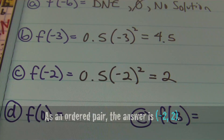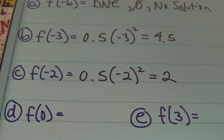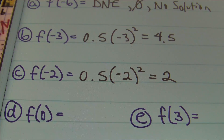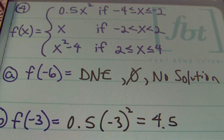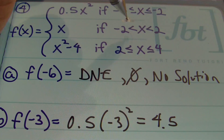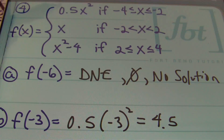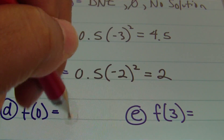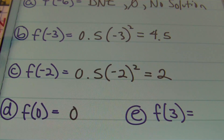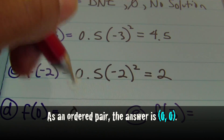For part d, x equals zero. Zero lies between negative two and positive two, so we use the second part of the piecewise function. Replacing x with zero, the answer is simply zero.